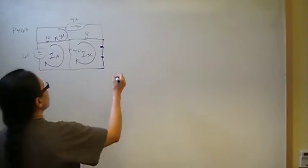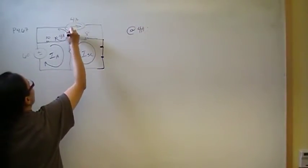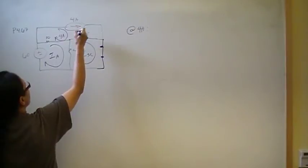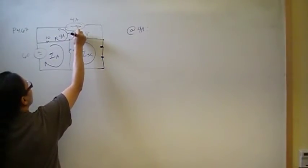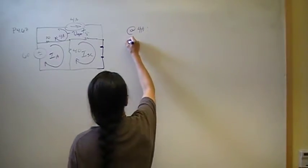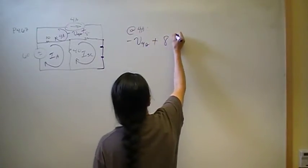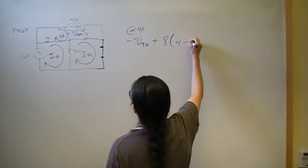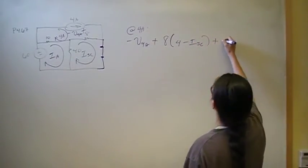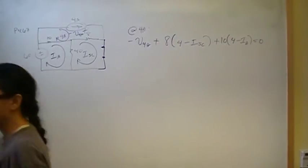Let's write the mesh equations. The mesh method uses KVL, so we're looking for voltage drops. The four amp independent current source has some unknown voltage V_4amp across it, giving a drop of negative V_4amps. The next drop is across the 8 ohm resistor: 8 times (4 minus I short circuit). The last drop is 10 times (4 minus Ia). All that sums to zero.